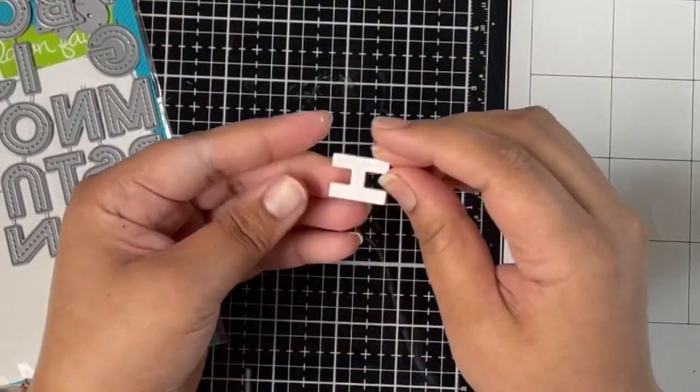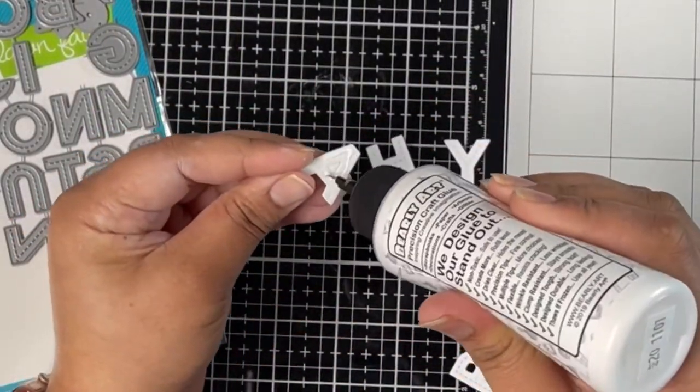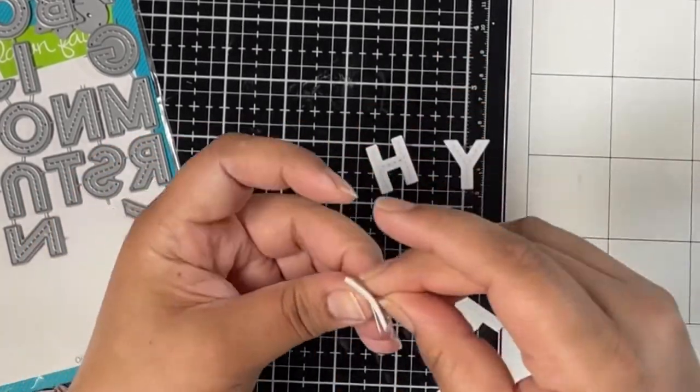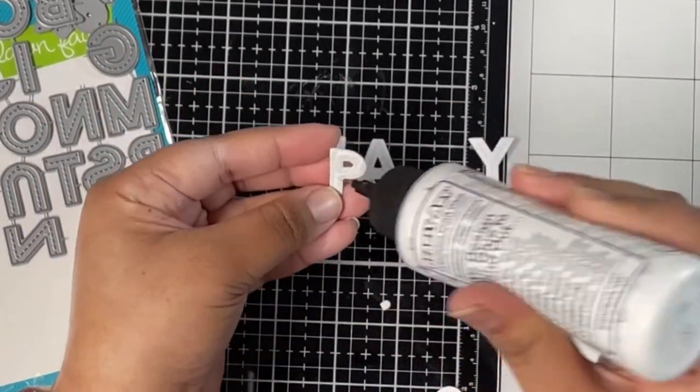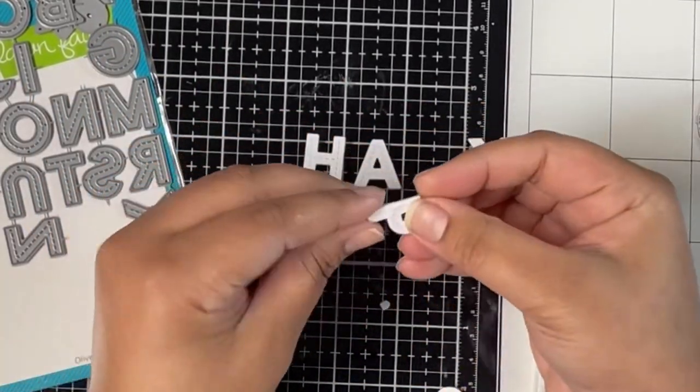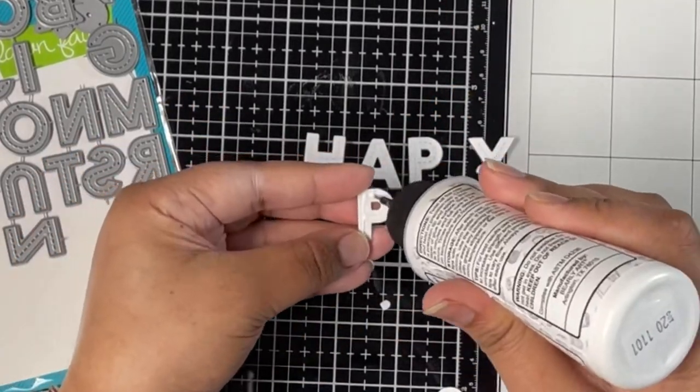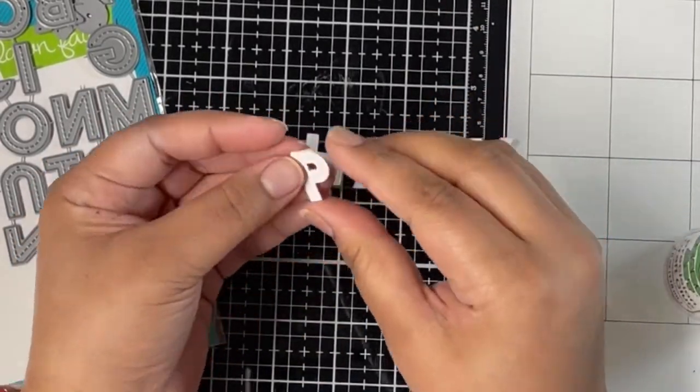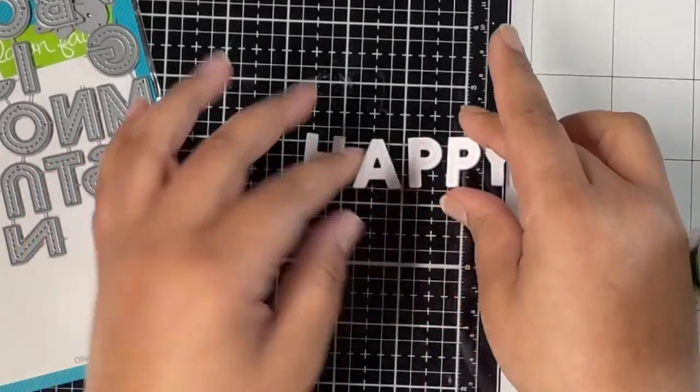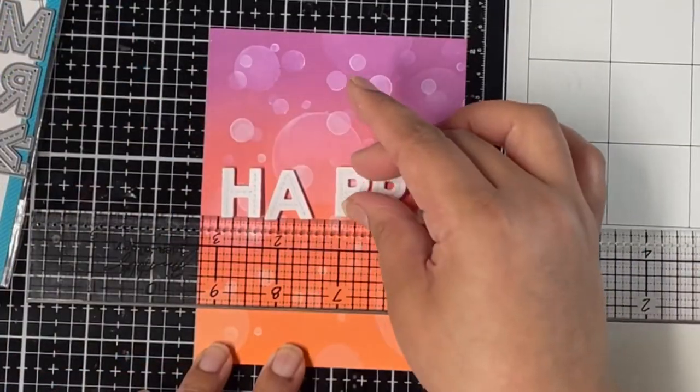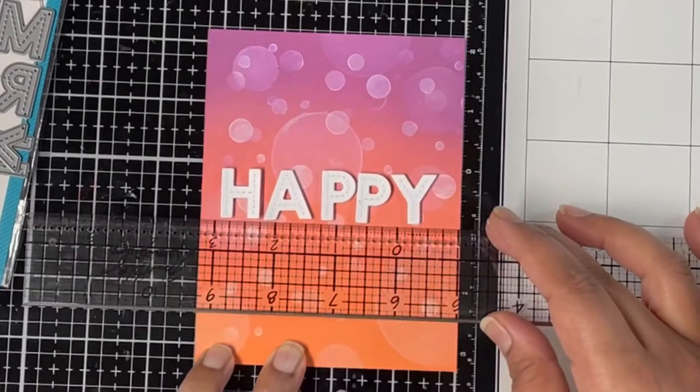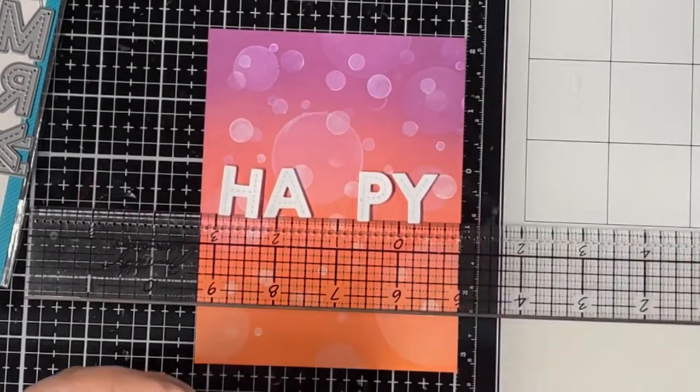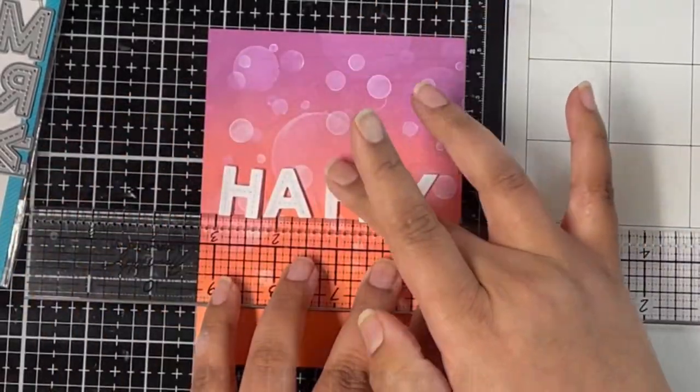Now for one card sentiment, I die cut Happy using the Oliver Stitched ABCs from Lawn Fawn with white cardstock. I also die cut the Happy sentiment using fun foam, and now I'm gluing the cardstock and fun foam die cuts together to create a dimensional sentiment. I'll glue the Happy sentiment to the background panel using the ruler as my guide, starting with the center letter first, then gluing the rest to make sure everything is centered and straight.